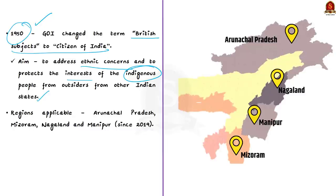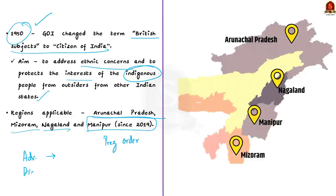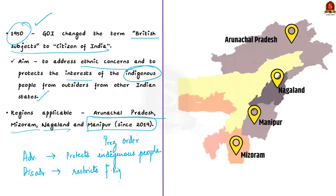The ILP is a colonial concept brought by the British under the Bengal Eastern Frontier Regulation Act of 1873, which restricted entry of outsiders into designated areas to protect the crown's commercial interests. After independence, the Indian government continued this system but changed the term 'British subjects' to 'citizens of India,' and the aim shifted to addressing ethnic concerns and protecting the interests of indigenous people from outsiders belonging to other Indian states. The ILP was previously applicable to northeastern states like Arunachal Pradesh, Mizoram, and Nagaland. After the presidential order of 2019, it was made applicable to Manipur as well. The West Bengal-based organization claims this is a violation of fundamental rights, as it gives the state government unrestrained power to restrict entry and exit of non-indigenous persons.